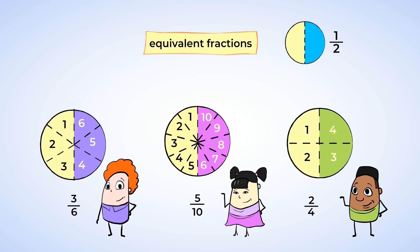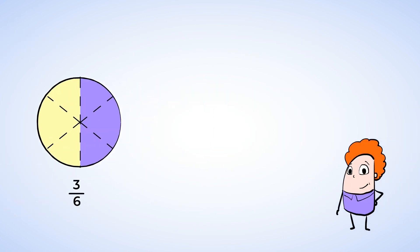The word equivalent means equal in value. Equivalent fractions may have different numbers, but the value of the fractions is all the same. Let's look at how one half can become all of these different fractions. Tim ate three out of six pieces. Well, we can change the fraction one half into three sixths by multiplying both the numerator and denominator by three. One half times three thirds equals three sixths.